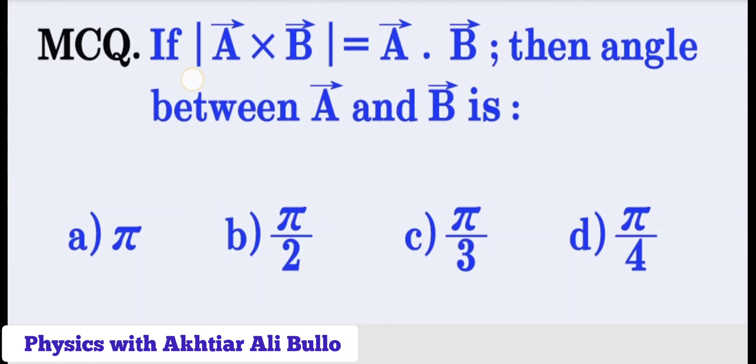If magnitude of A cross B is equal to A dot B, then angle between A and B is: a) π, b) π/2, c) π/3, d) π/4. The magnitude of cross product A cross B